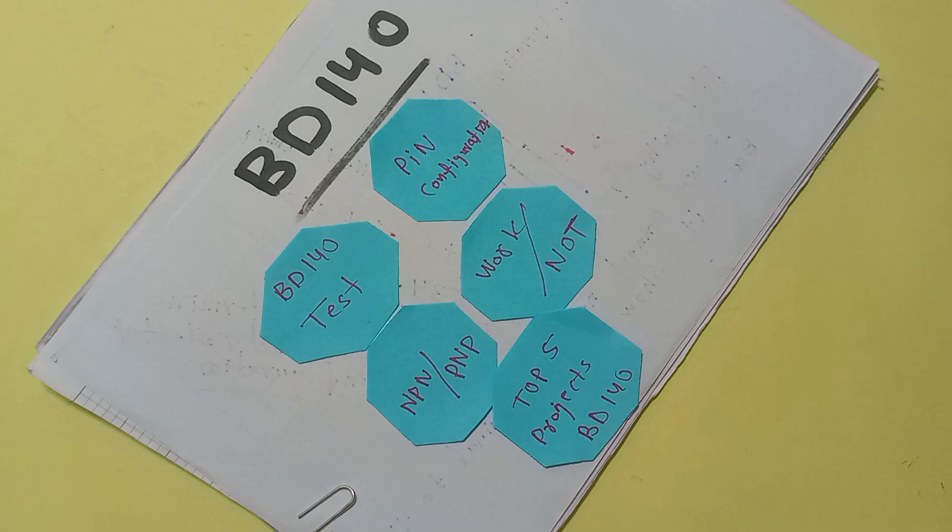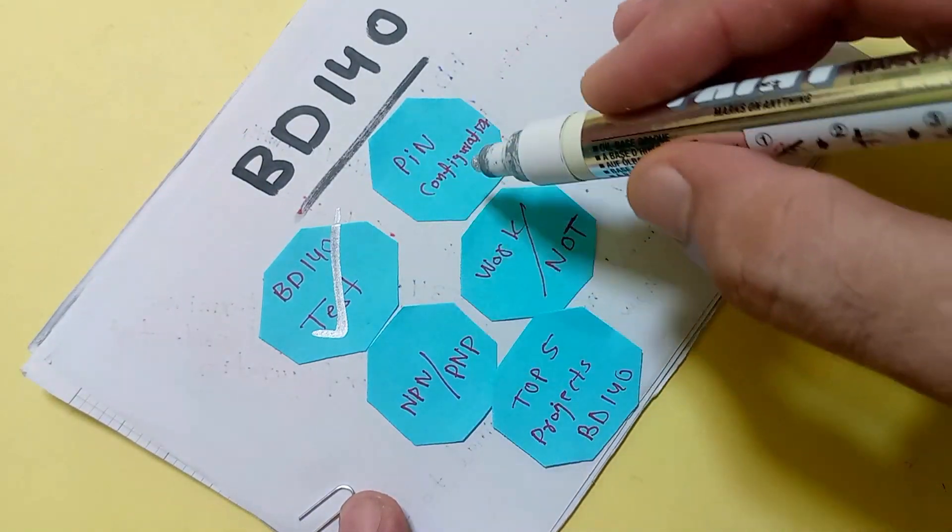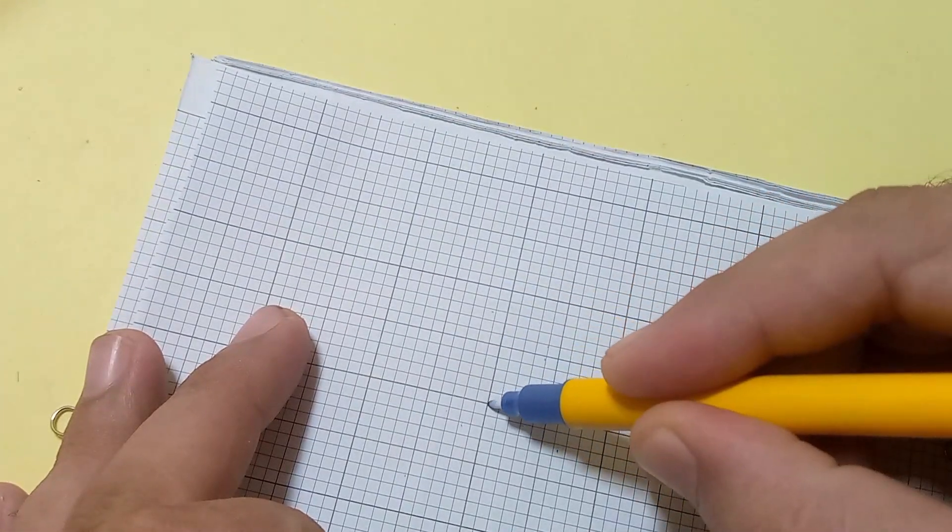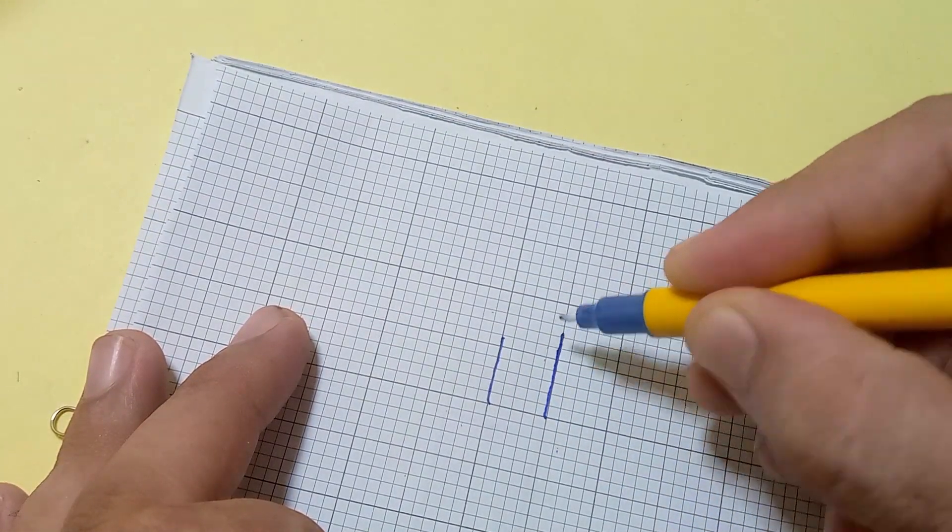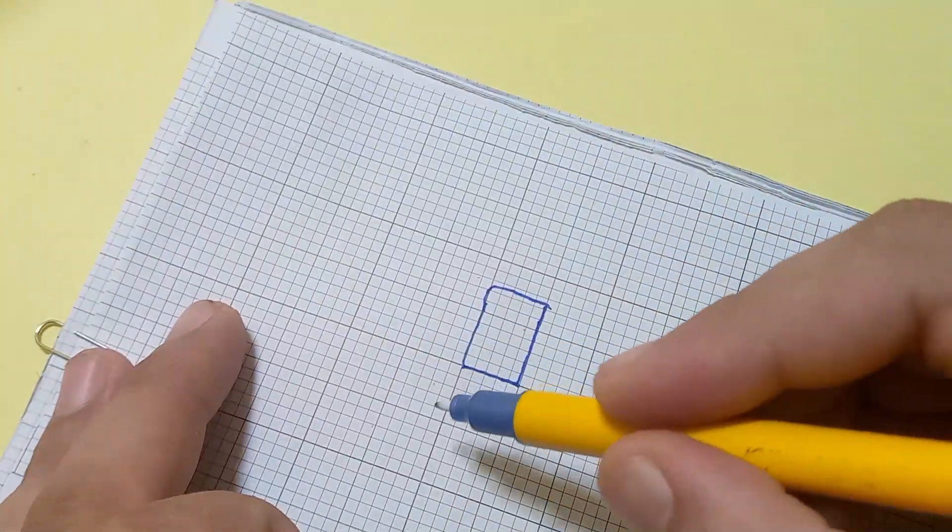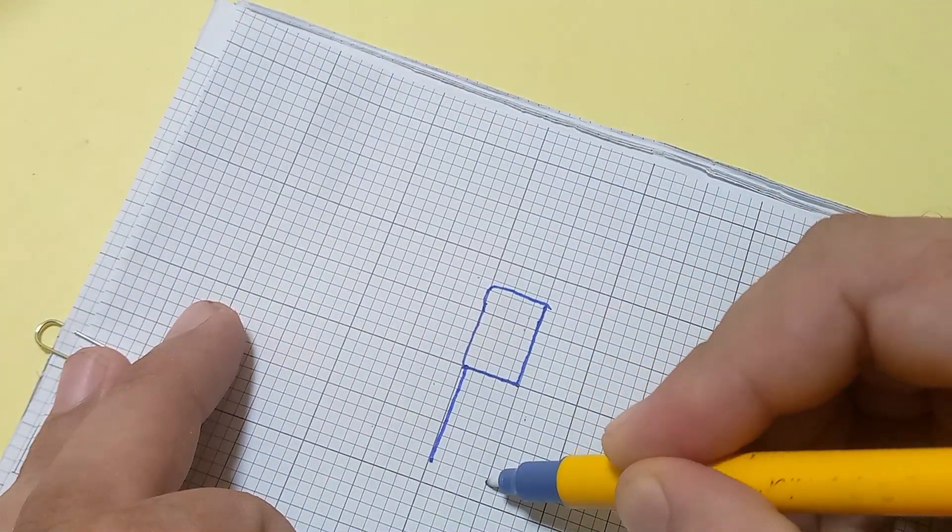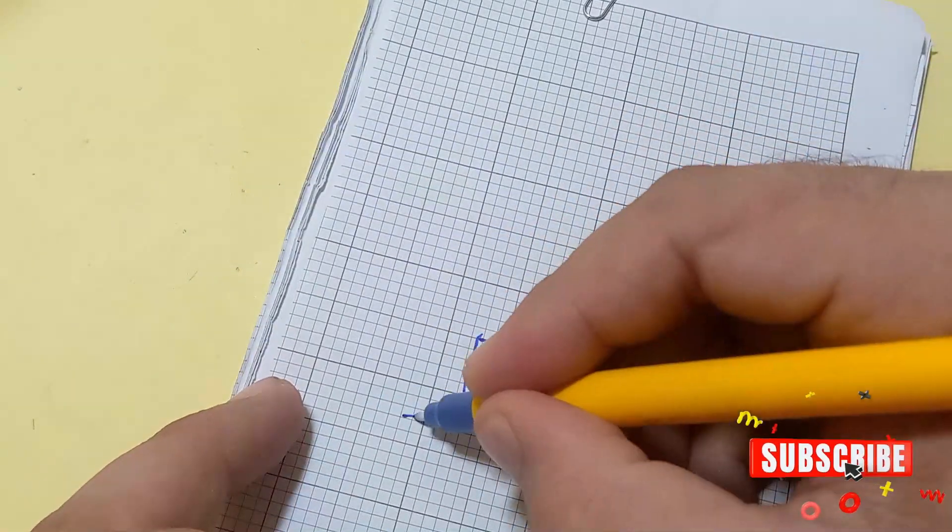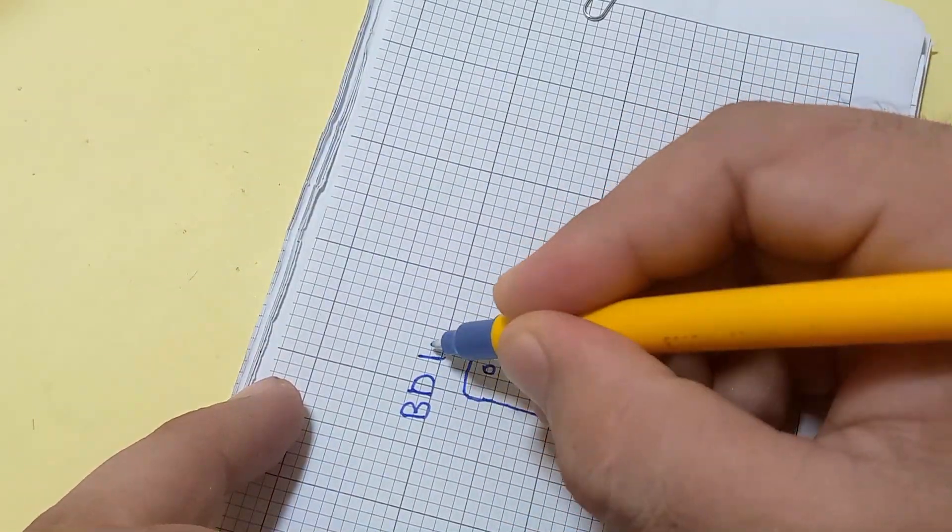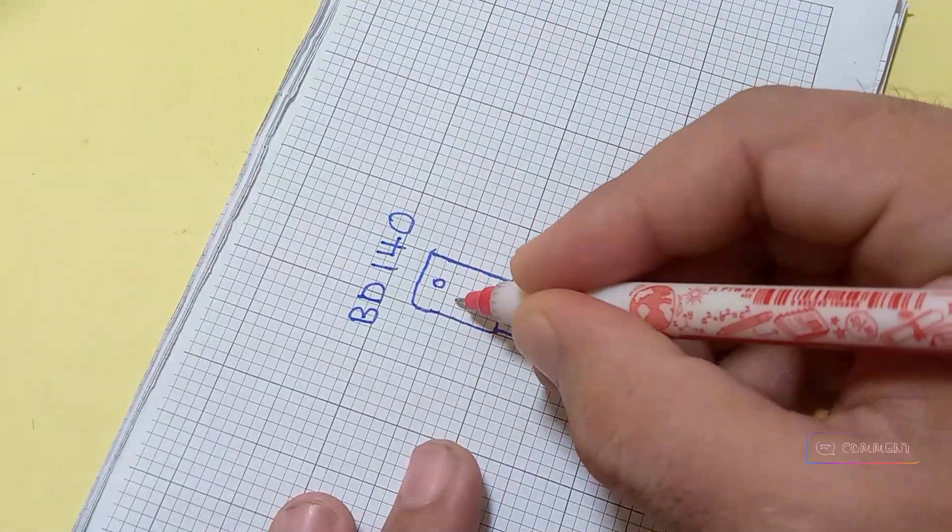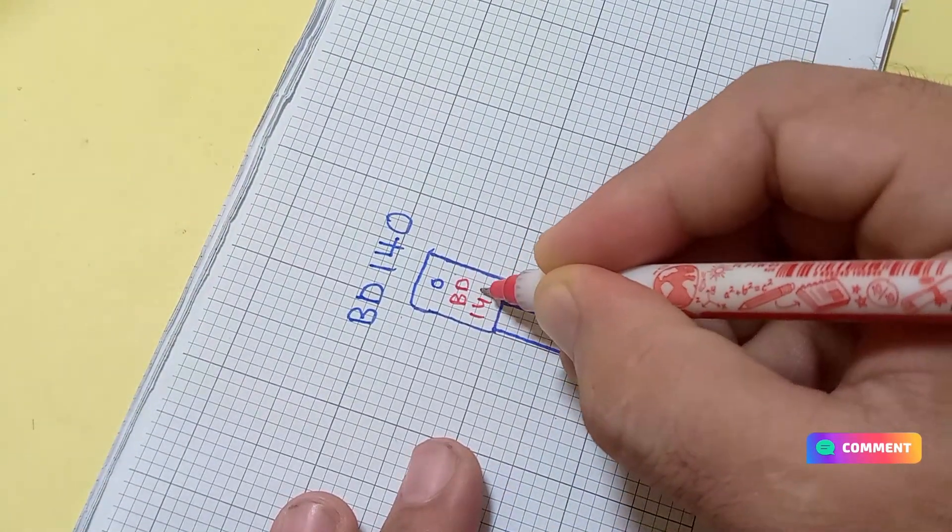Let's move towards the starting and find the answers of all these questions one by one. First of all, we draw a rough diagram of BD-140 transistor to solve these problems and questions in a better way. Are you ready for the first question?